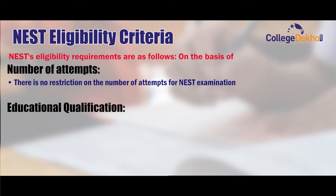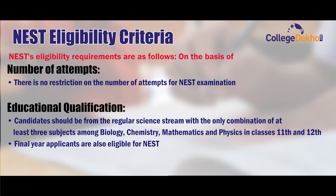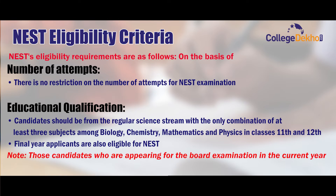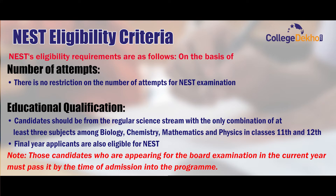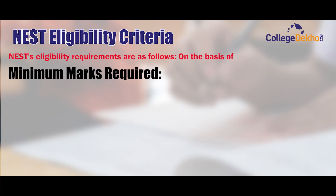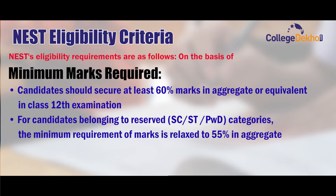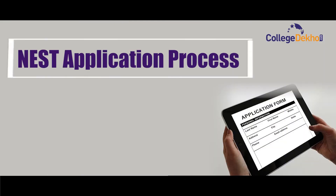On the basis of educational qualification, candidates should be from the regular science stream with a combination of at least three subjects among biology, chemistry, mathematics, and physics in classes 11th and 12th. Final year applicants are also eligible; however, those appearing for board exams in the current year must pass by the time of admission. On the basis of minimum required marks, candidates should secure at least 60 percent in aggregate in class 12, while reserved category candidates have a relaxation to 55 percent in aggregate.